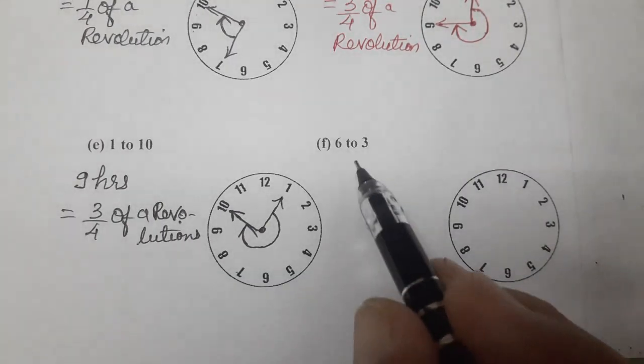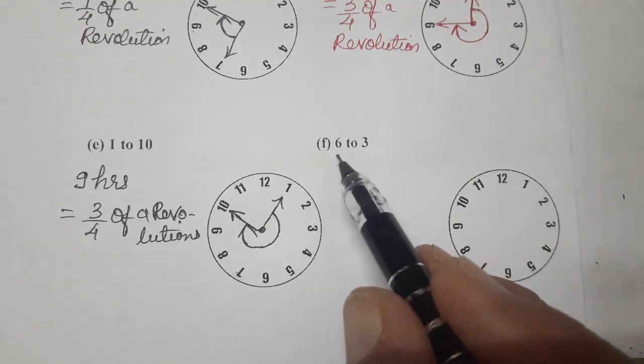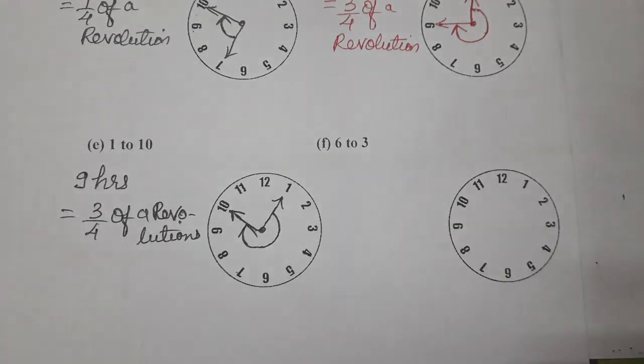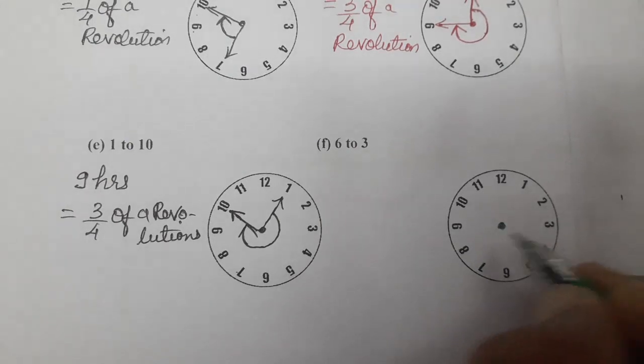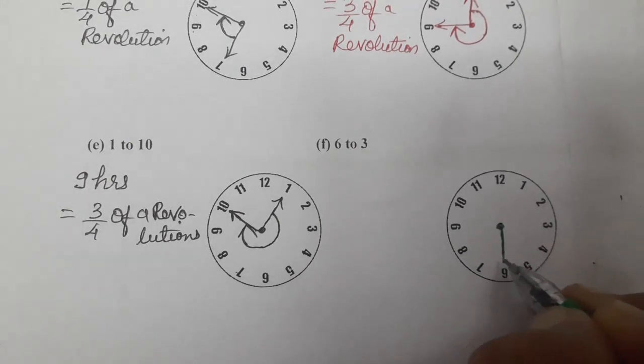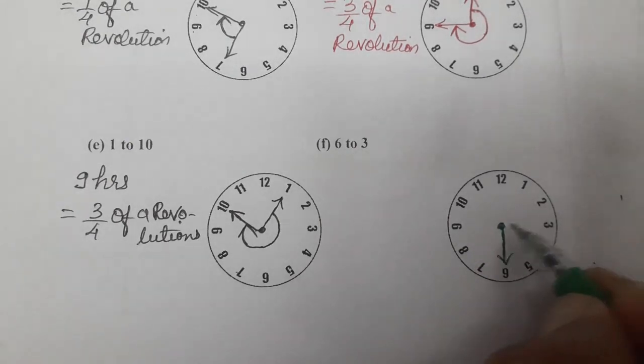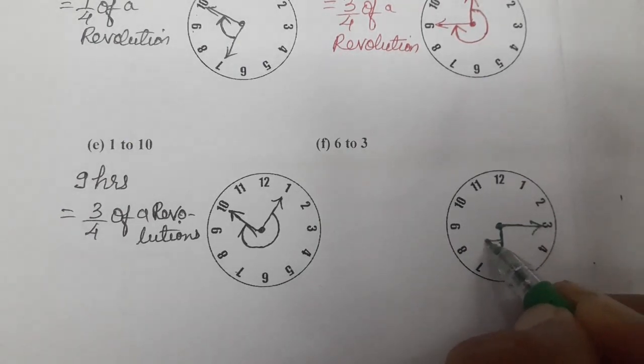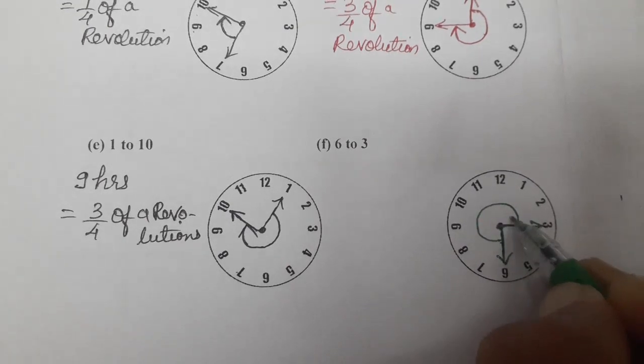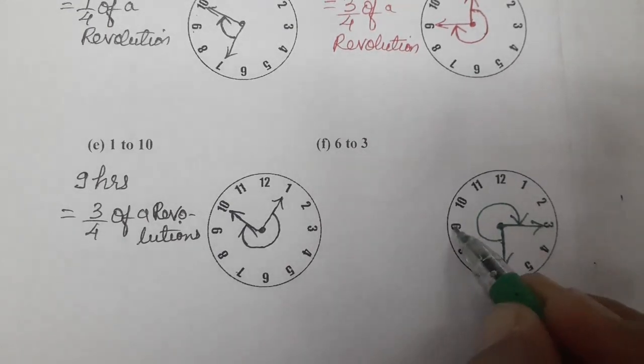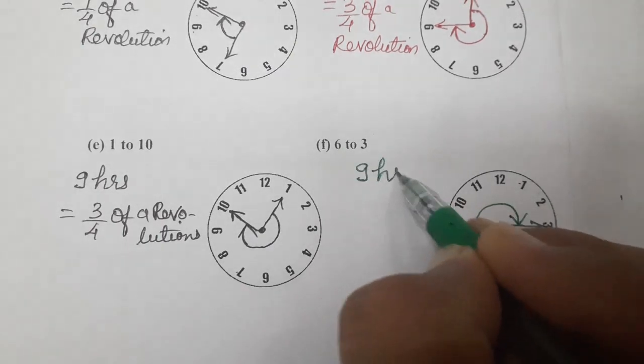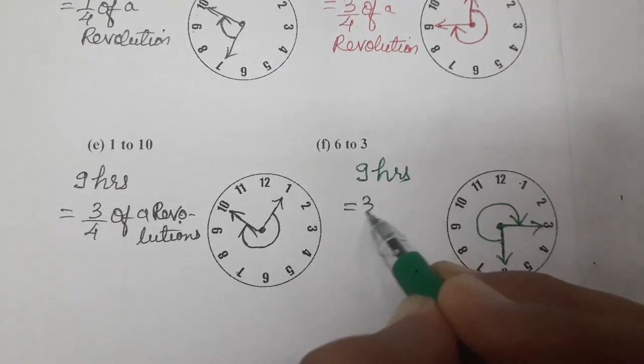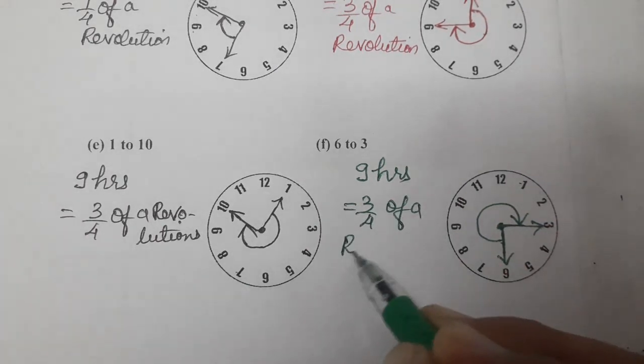Now, comes to last one, F1. 6 to 3. So, where is 6? 6 is here. Where is 3? 3 is here. And we have to move clockwise. Don't think that here. We have to move clockwise in this way. So, 1, 2, 3, 4, 5, 6, 7, 8, 9. So, it is 9 hours. 9 hours means, again, 3 fourth of a revolution.